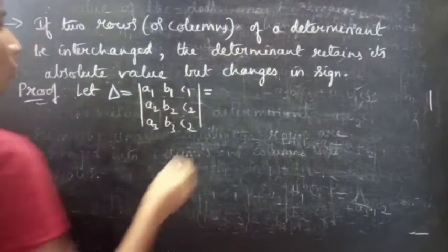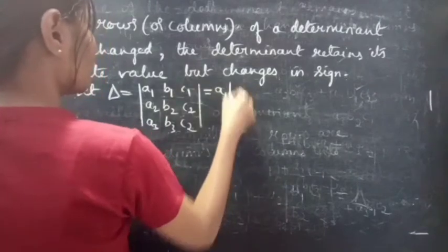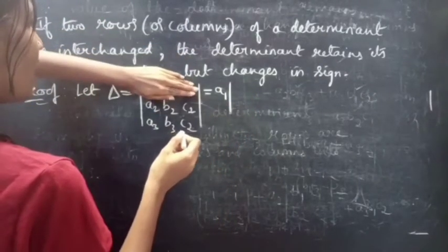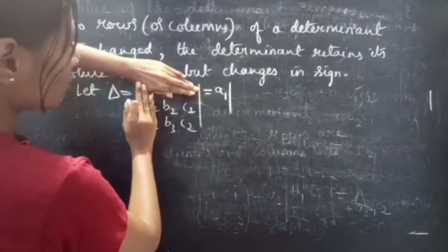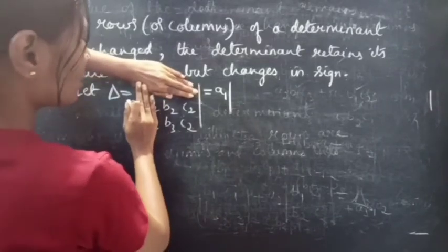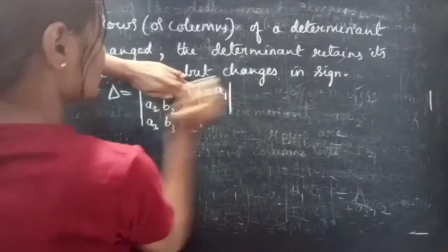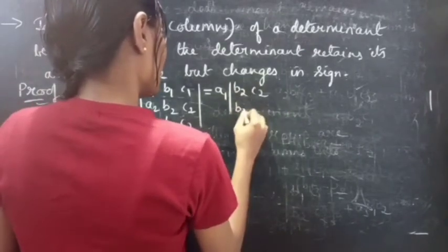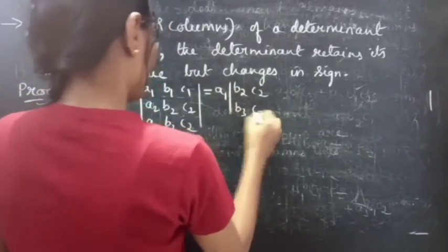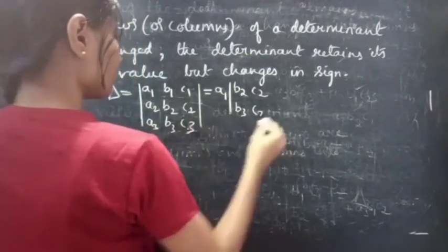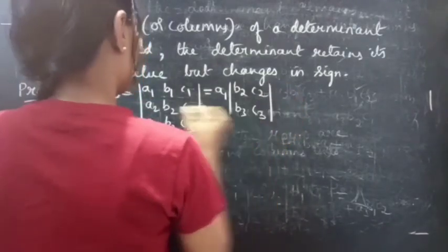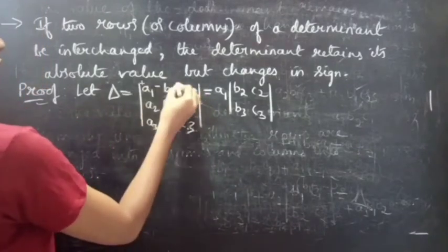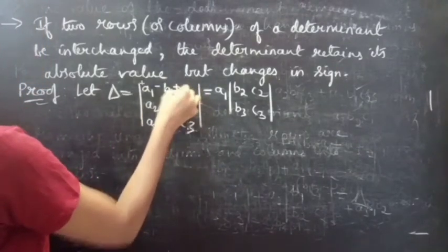So this equals a1 into — close the row containing a1 and column containing a1 — so you will get det of b2, c2, b3, c3. We get alternative signs: plus, minus, plus.